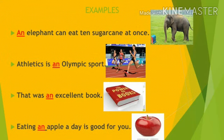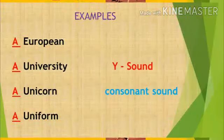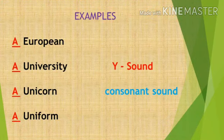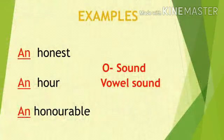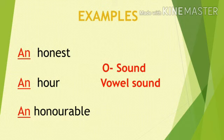So we use AN before these words. Let us see a few more examples: a European, a unicorn, a university, a uniform. In these words, we see that the nouns begin with a vowel letter but sound like a consonant. So we use A before these nouns. More examples: an honest, an art, an honorable. Here we see the nouns begin with a consonant letter but sound like a vowel. So we use AN before these nouns.